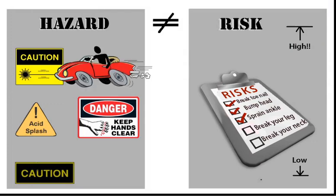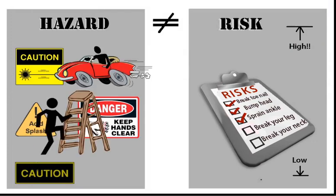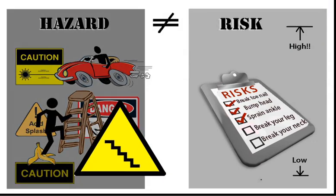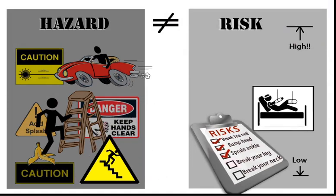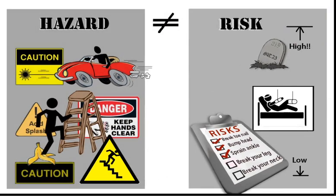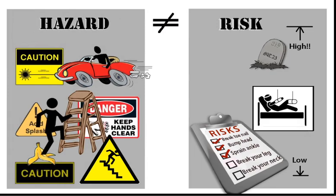Hazards are all around — cars, ladders, banana peels. A staircase can be a hazard. The risk is possible injury or worse. Hazards are anything that can cause harm. Risk is the potential for a hazard to cause harm.